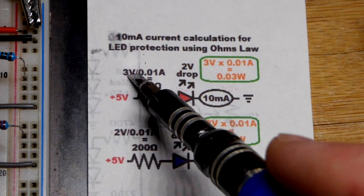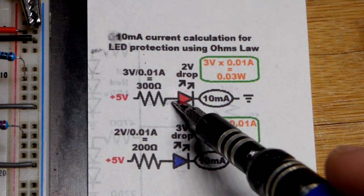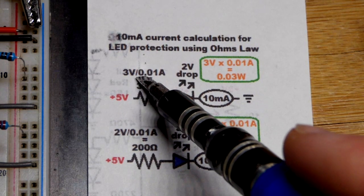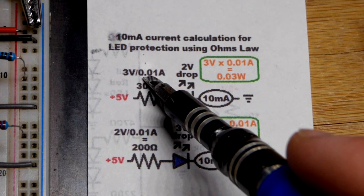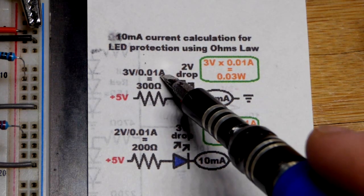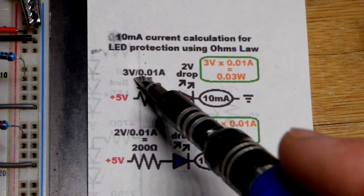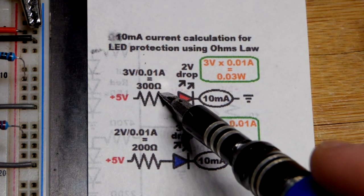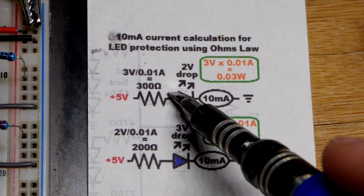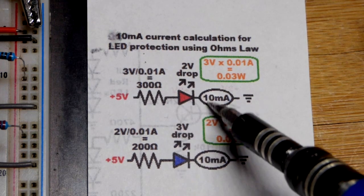We divide 3 volts by the current we want, which is 0.01 amps, giving us 300 ohms. I'm actually going to use a 330 ohm resistor, so we'll probably have a little less than 10 milliamps of current, as we'll measure.